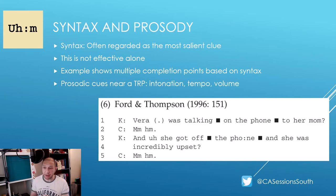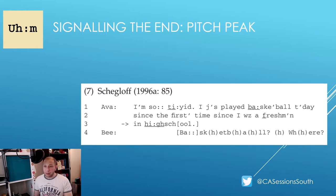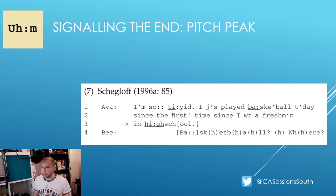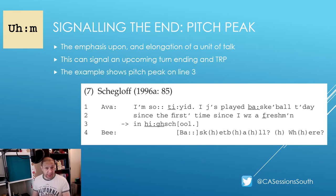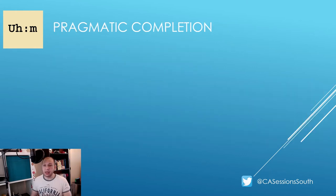This is where prosody comes in — the cues discernible in or around the TRP, which relates to what might be described as the music of talk. This relates to changes in intonation, tempo and volume. These prosodic cues can be identified in the final unit of a turn, such as an upward or downward change in pitch. There are also prosodic cues that signal the end of a turn a little earlier — pitch peak is one of those cues. This is evident when there's a particular emphasis and elongation on a unit of talk, which can signal that a turn is ending and project an upcoming TRP. The example here shows the pitch peak arriving on line three, projected so well that B initiates their turn in slight overlap on line four.